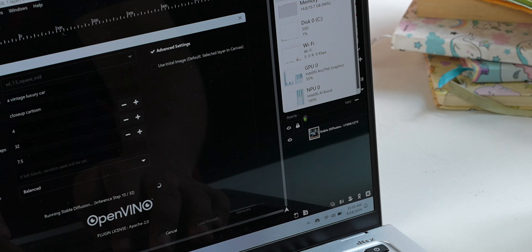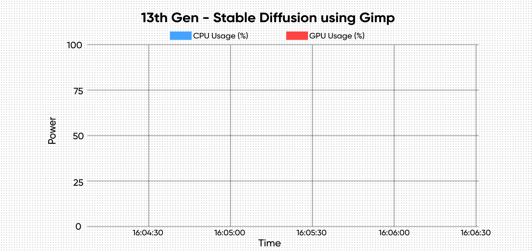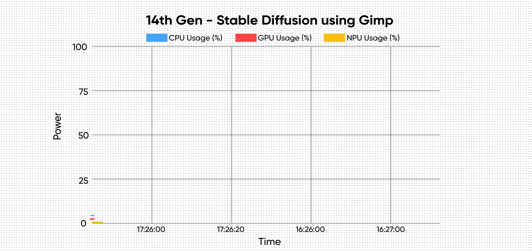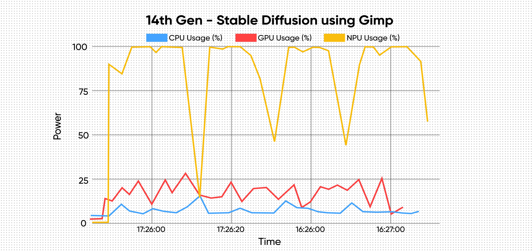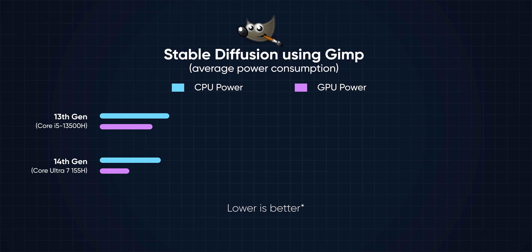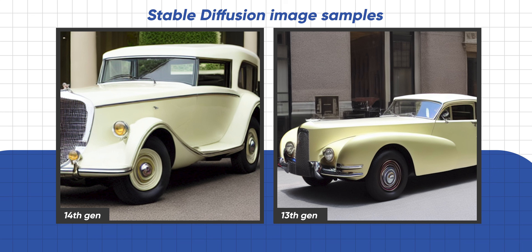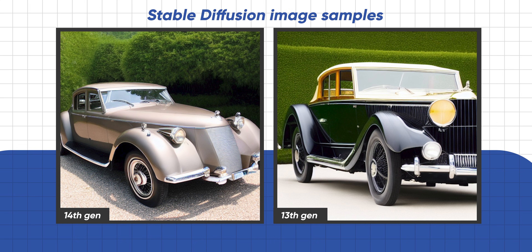As you can see from these graphs, the neural processor is working its magic. The 13th-gen machine with no NPU relies heavily on its GPU, with average GPU load hovering at a staggering 90%, whereas the NPU does most of the heavy lifting on the 14th-gen system, significantly freeing up the GPU. The 14th-gen system also drew a lot less power while finishing the task nearly two times faster. The NPU on Intel's Core Ultra chip is no joke.